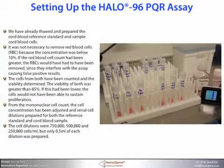The cells from both have been counted and the viability determined. The viability of both the reference standard and the sample was greater than 85%. If this had been lower, the cells would not have been able to sustain proliferation. From the mononuclear cell count, the cell concentration has been adjusted and the serial cell dilutions prepared for both the reference standard and cord blood sample.